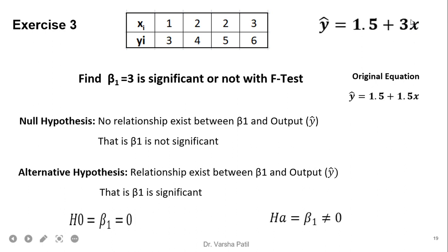In the third example, I purposely changed the regression equation to demonstrate how the F-test responds when a variable is not significant. For this dataset the original regression equation is Ŷ = 1.5 + 1.5X, but I intentionally used Ŷ = 1.5 + 3X so that the coefficient 3 is not significant. We state the same null and alternative hypotheses as in the previous two examples to perform the significance check.